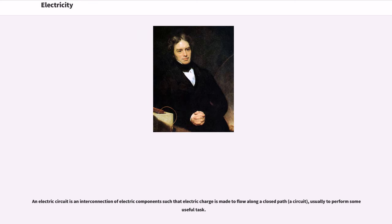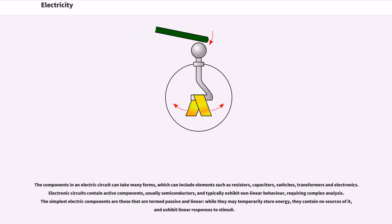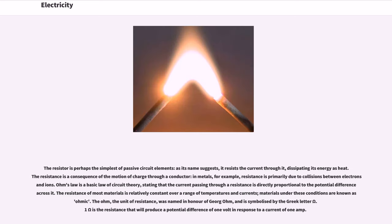An electric circuit is an interconnection of electric components such that electric charge is made to flow along a closed path, a circuit, usually to perform some useful task. The components in an electric circuit can take many forms, which can include elements such as resistors, capacitors, switches, transformers and electronics. Electronic circuits contain active components, usually semiconductors, and typically exhibit non-linear behavior, requiring complex analysis. The simplest electric components are those that are termed passive and linear: while they may temporarily store energy, they contain no sources of it, and exhibit linear responses to stimuli. The resistor is perhaps the simplest of passive circuit elements; as its name suggests, it resists the current through it, dissipating its energy as heat. The resistance is a consequence of the motion of charge through a conductor; in metals, for example, resistance is primarily due to collisions between electrons and ions.